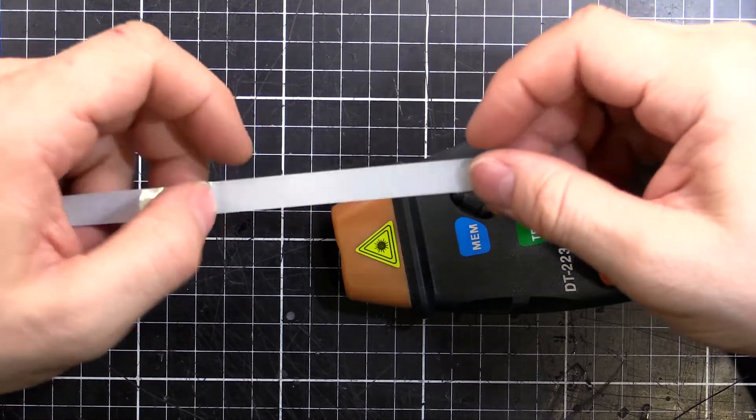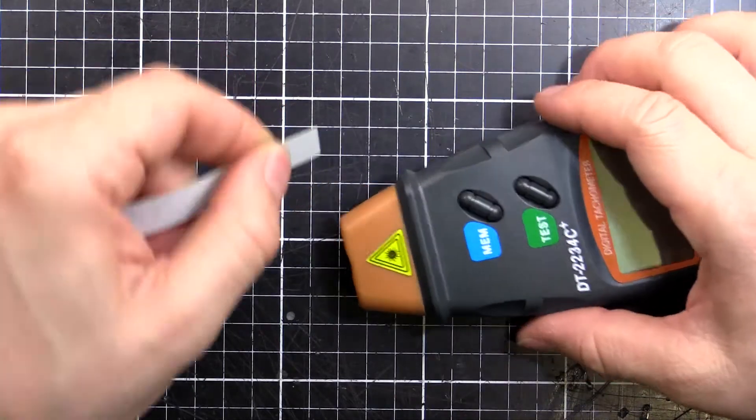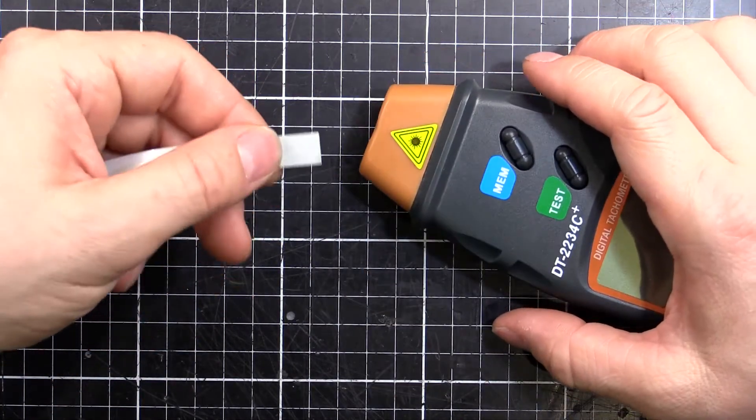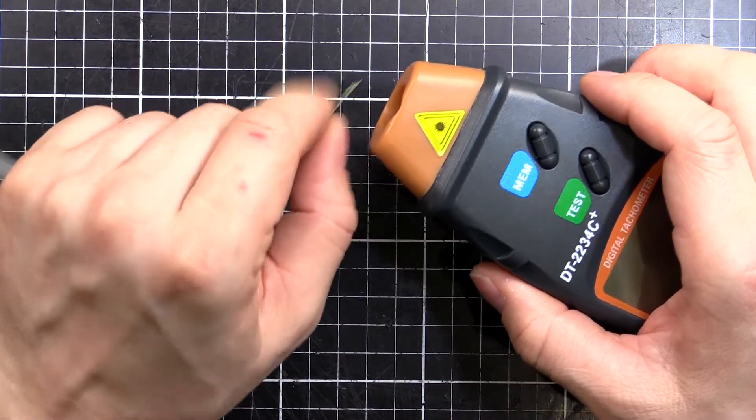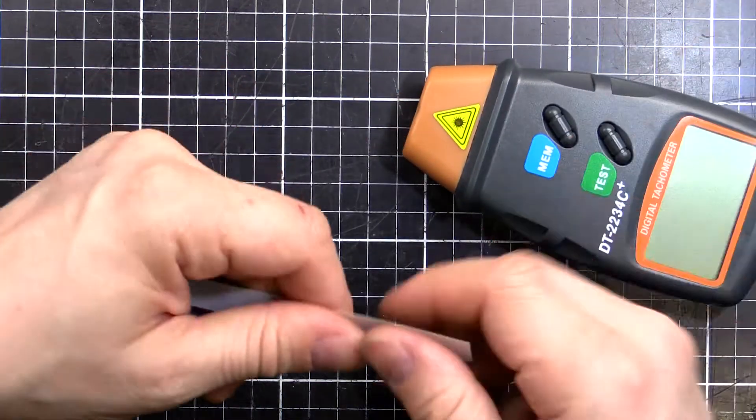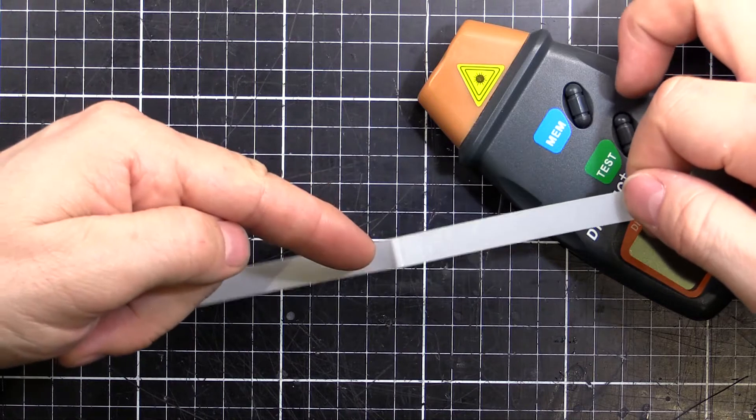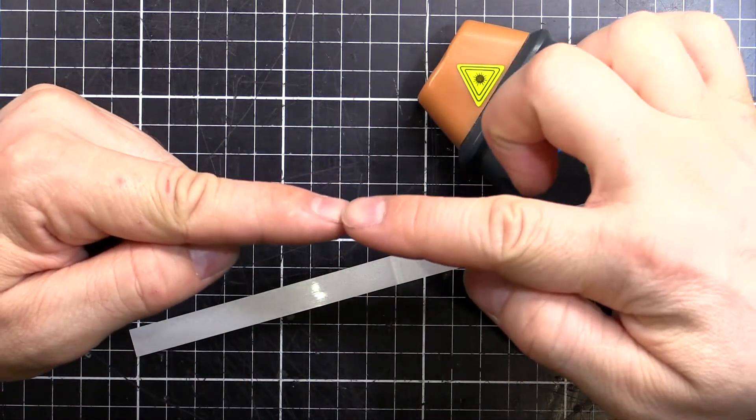It's in a sticker form. You cut a little bit off, put it onto your wheel or pulley or whatever you want to measure. Then as it spins around, it'll go past and reflect back the red light.